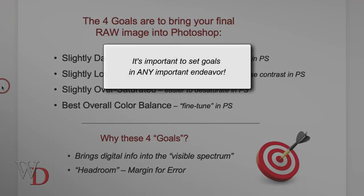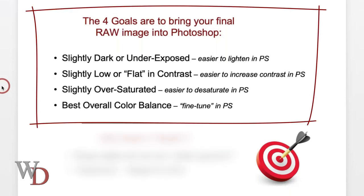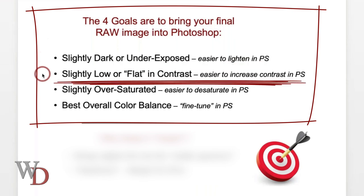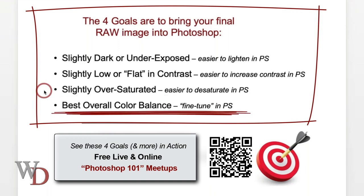It's important to set goals, so the four goals are: bring your final RAW image into Photoshop slightly darker — underexposed — because it's easier to lighten in Photoshop; slightly low or flattened contrast, because it's easier to increase contrast in Photoshop; and slightly oversaturated, because it's easier to desaturate in Photoshop.